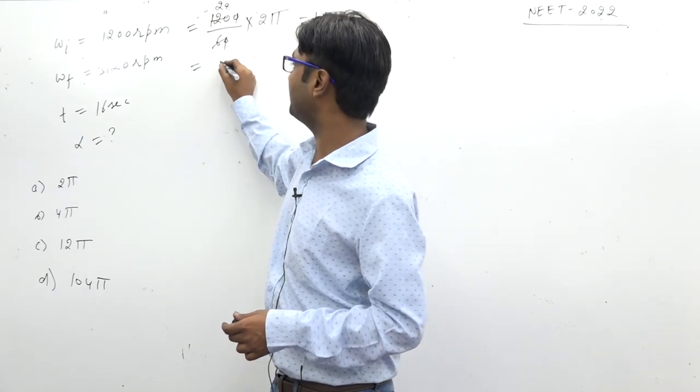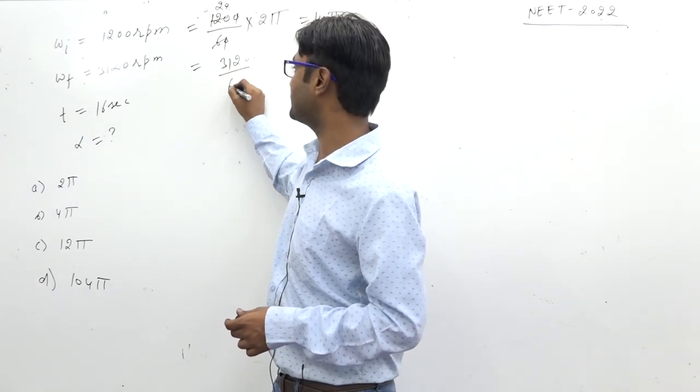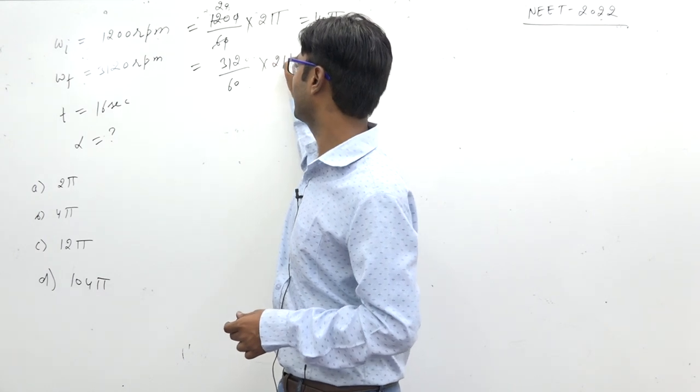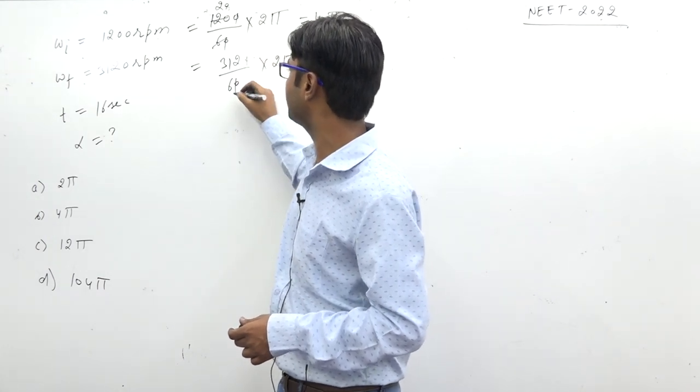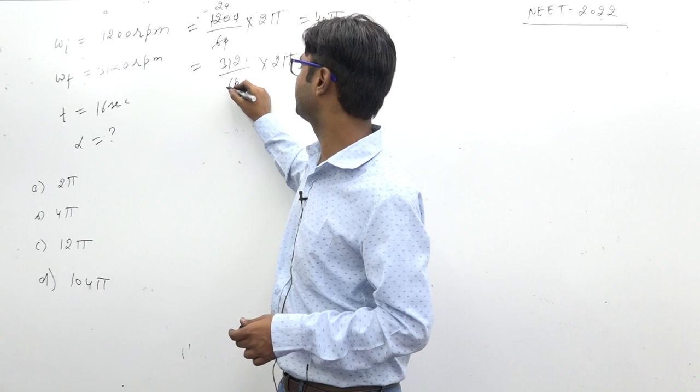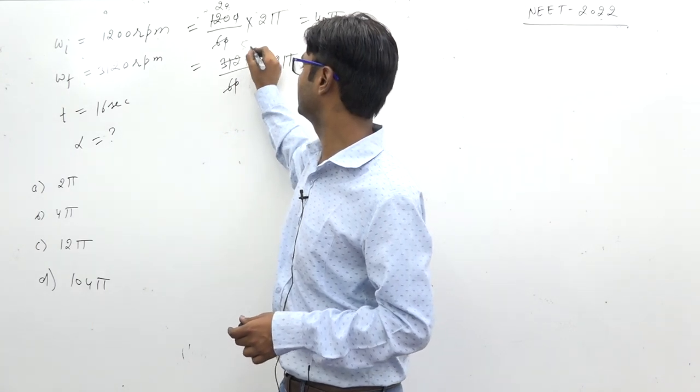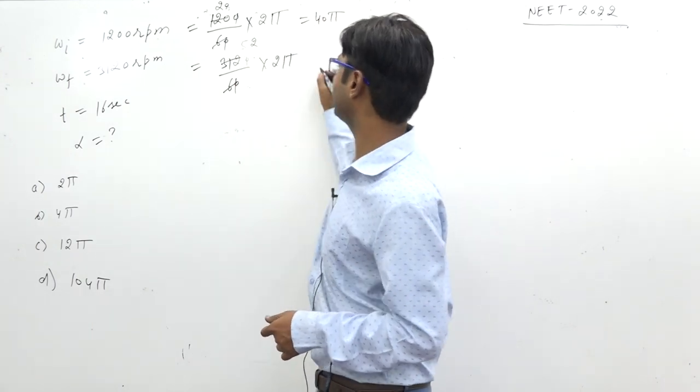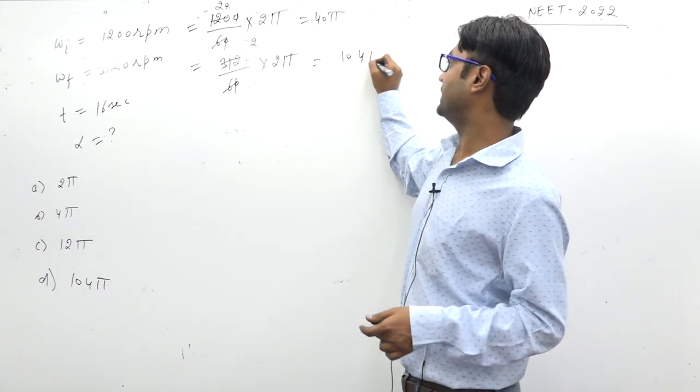Omega final, this is omega final. Here is 320 divided by 60, multiply by 2π. How do we do? 16 by 3, 16 by 3 is 104 by 3π. How much is it? 104π by 3.